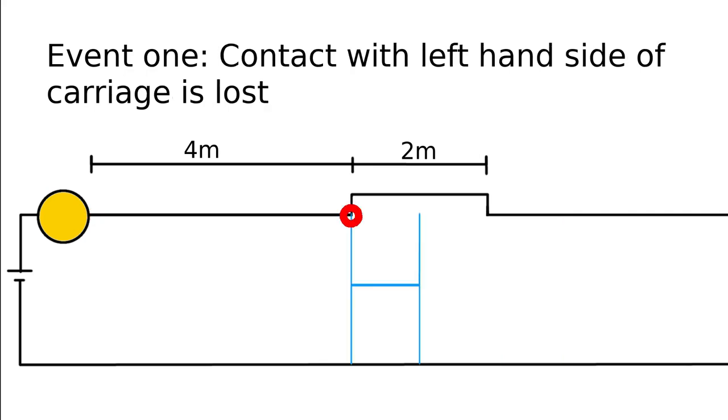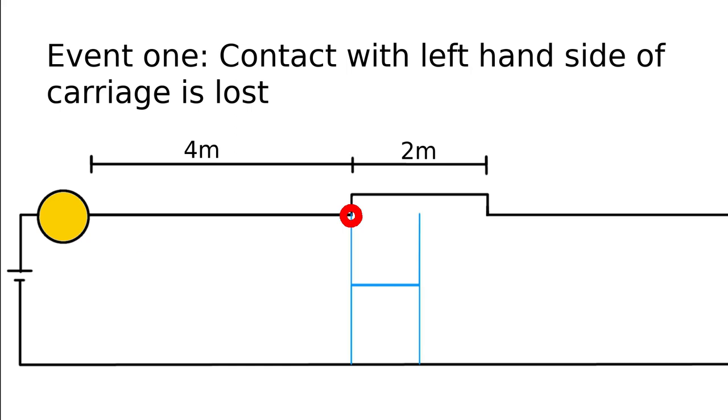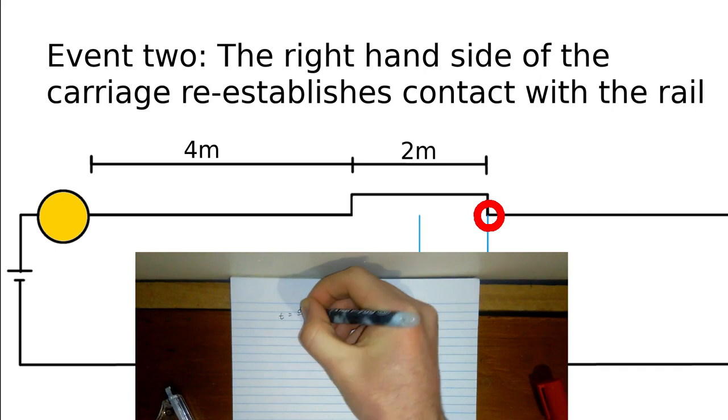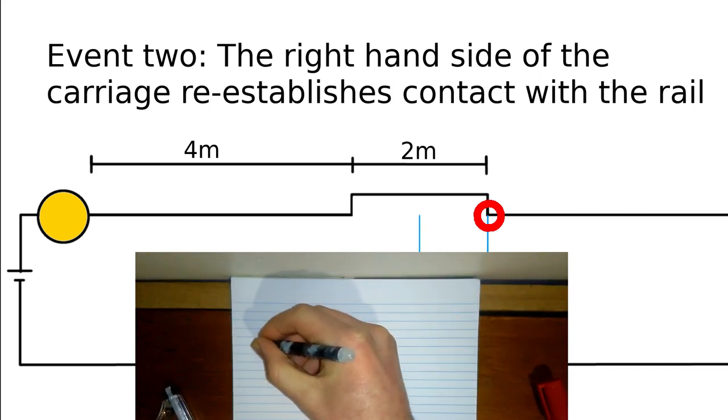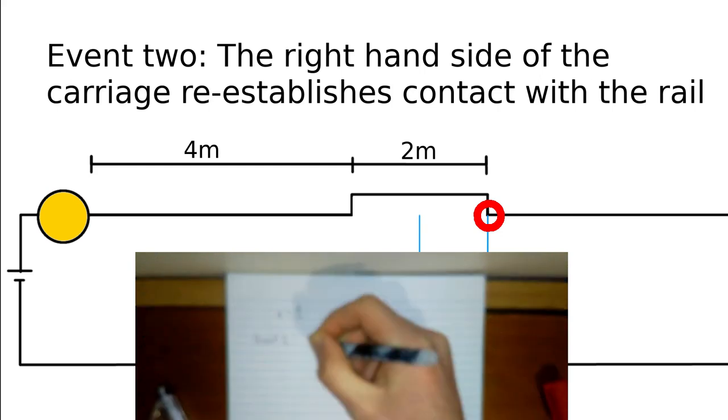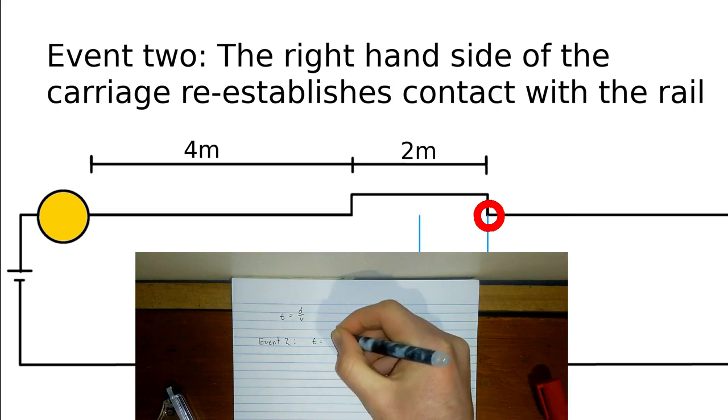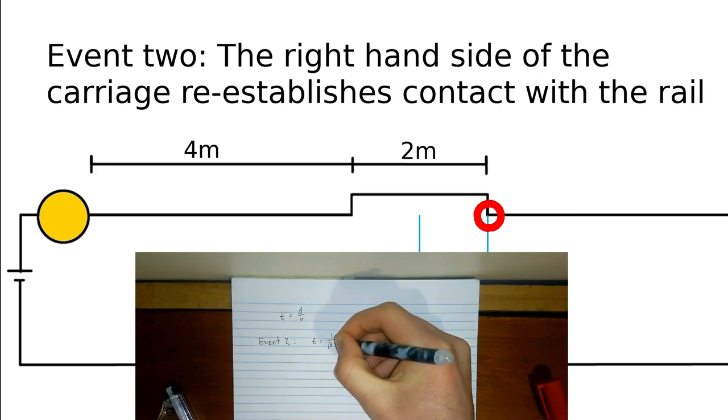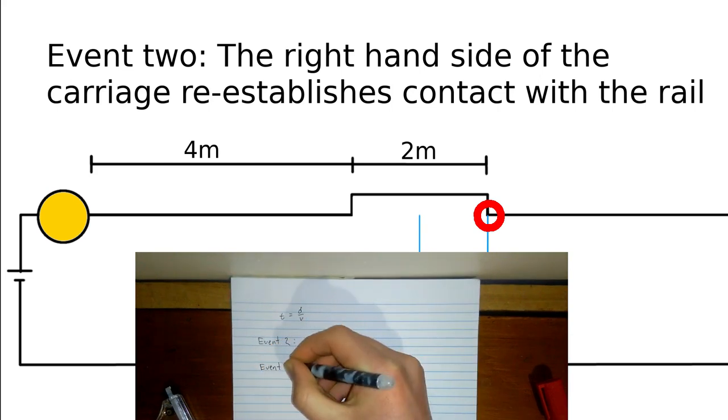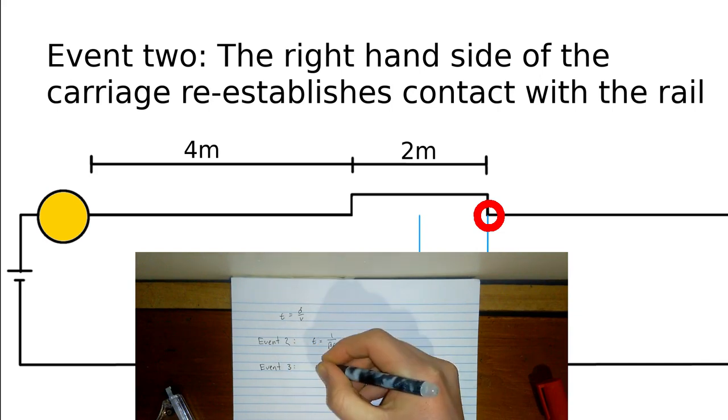Now let's see when these events occur. Firstly, let's consider the track stationary and the carriage moving at beta c. Obviously, event 1 occurs first, as it starts all the other events. Let's define this as time 0. Event 2 is dependent on the time it takes for the carriage to cross the gap. We will use our value of beta found earlier. Remember, the right hand side is already halfway across by the time the left hand side loses contact. So, event 2 occurs at t equals 1 divided by beta c. That's approximately 3.8 times 10 to the negative 9 seconds.